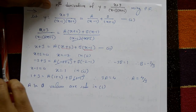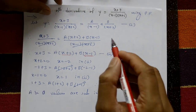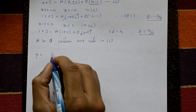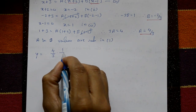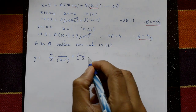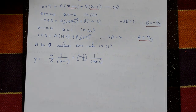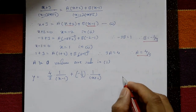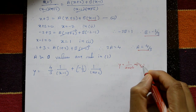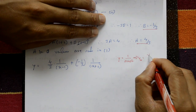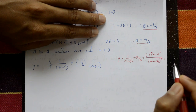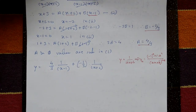Substitute A and B values in equation number 1: y = (4/3) · 1/(x-1) + (-1/3) · 1/(x+2). The standard nth derivative formula for y = 1/(ax+b) is: y_n = (-1)^n · n! · a^n / (ax+b)^(n+1).